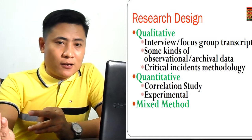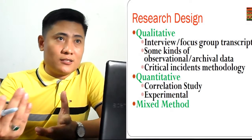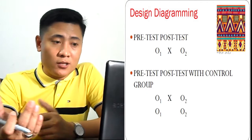Qualitative — you will be dealing with interviews, observations, and qualities. Quantitative — it's something that is measurable, like if you are dealing with correlation or experimental studies. And mixed — I think is the most powerful of all, because you combine these two approaches.